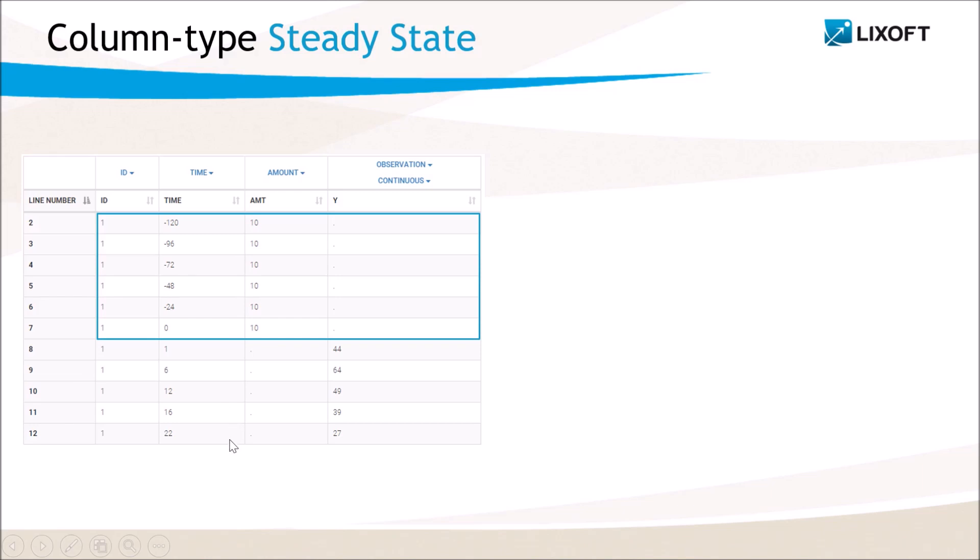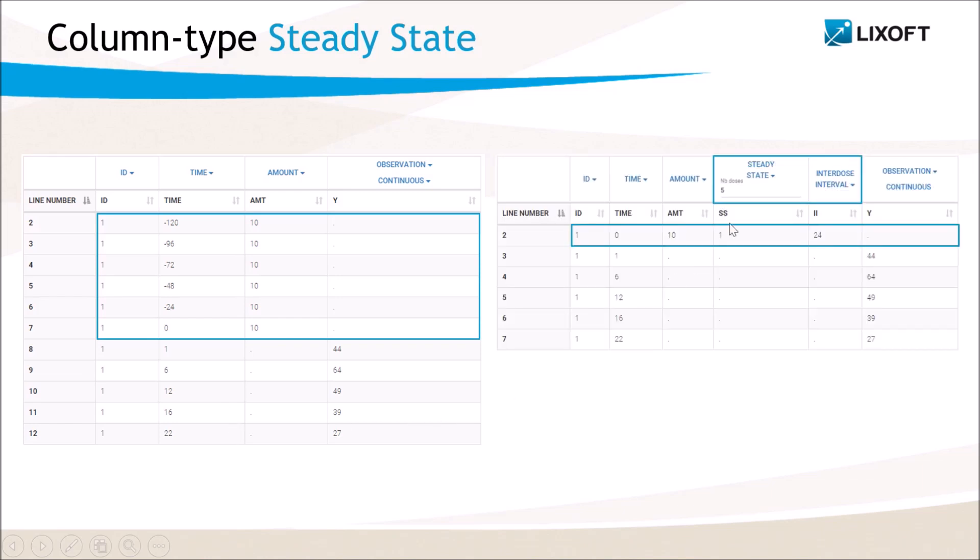This data set can be encoded equivalently with two columns of type steady state and interdose interval like on this data set. The steady state flag on the dose row means that a fixed number of doses with the same amount are added before this dose.